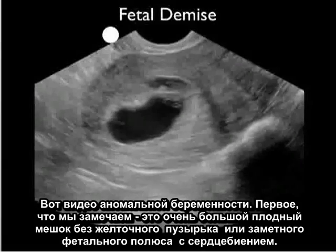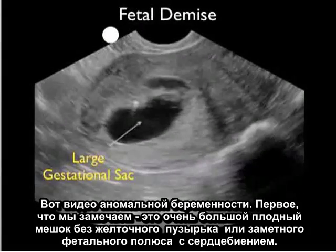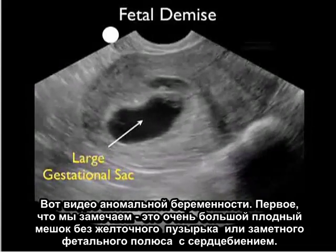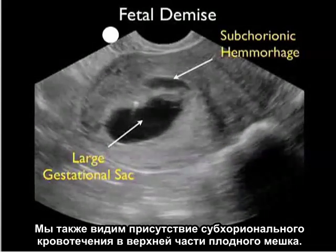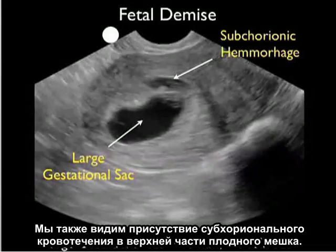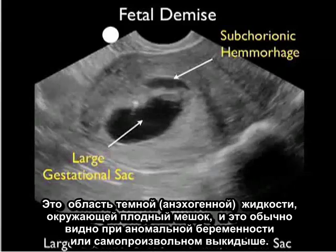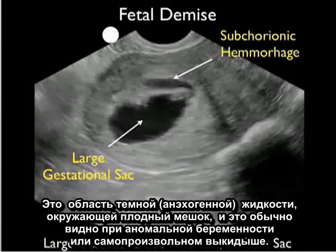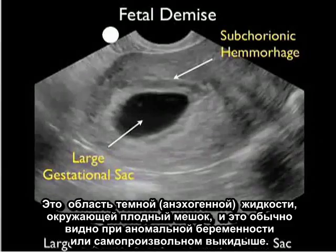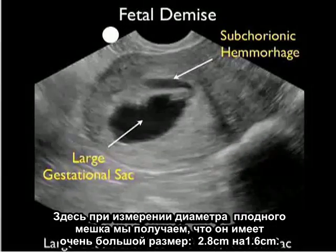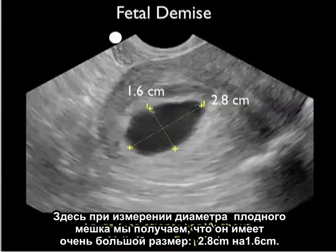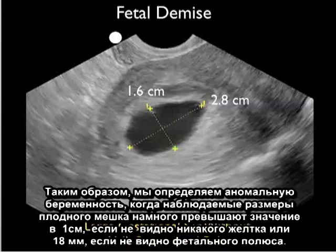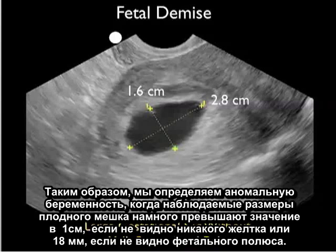Here's video from an abnormal pregnancy. The first thing we notice is a very large gestational sac without a yolk sac or discernible fetal pole with heartbeat. We also see the presence of subchorionic hemorrhage to the superior aspect of the gestational sac — that area of dark or anechoic fluid surrounding the gestational sac — seen commonly with abnormal pregnancies or spontaneous miscarriage. Placing the calipers, the gestational sac measures very large at 2.8 centimeters by 1.6 centimeters, much larger than the 10-millimeter or 18-millimeter thresholds.